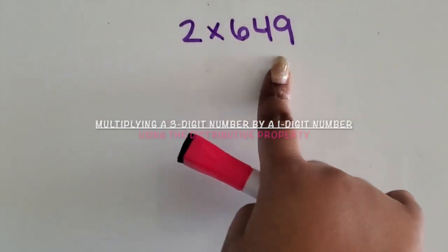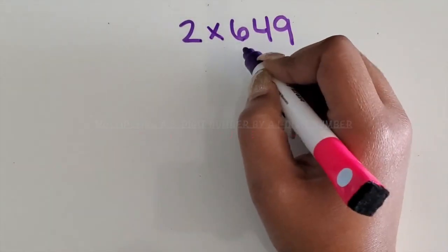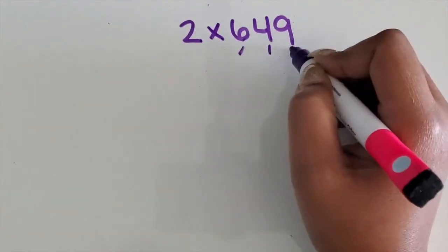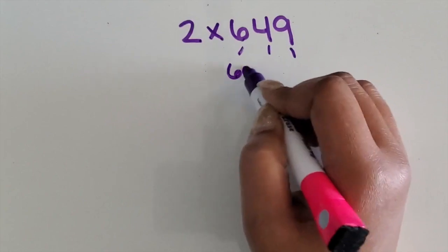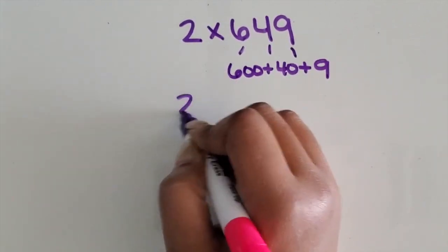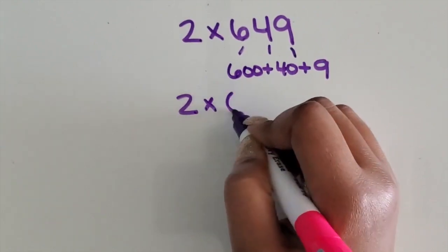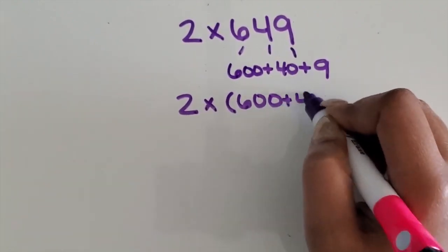We're going to multiply a one-digit number by a three-digit number using the distributive property. I want students to break apart that multi-digit number based on place value, so it will be 600 plus 40 plus 9. Then we're going to rewrite the equation with that expanded form number.